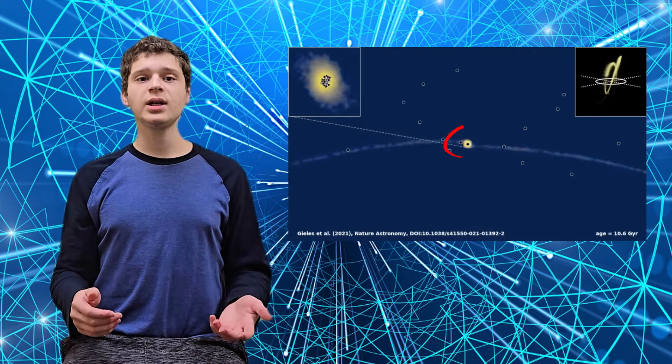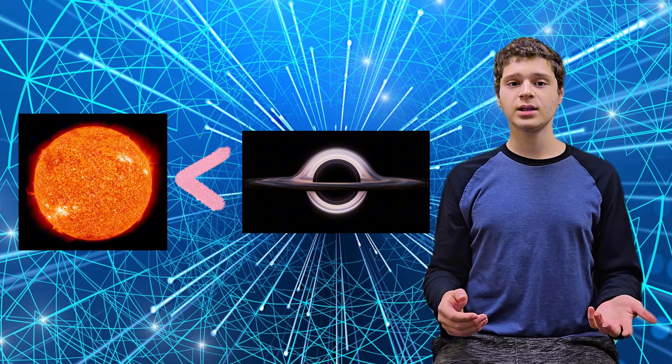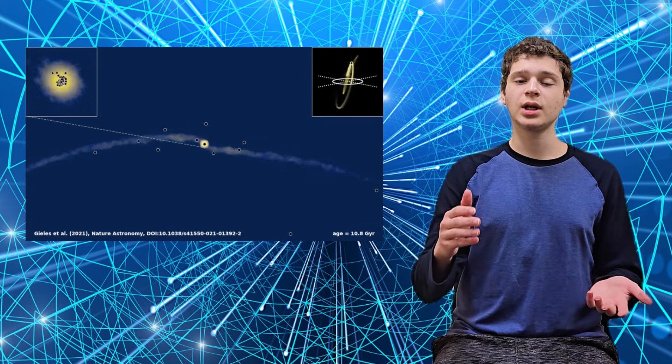However, the simulations indicated a much higher number of black holes than expected. This makes sense. Since stars have a lower mass, they escape the cluster much more efficiently and readily than black holes, increasing the proportion of black holes in the cluster over time.